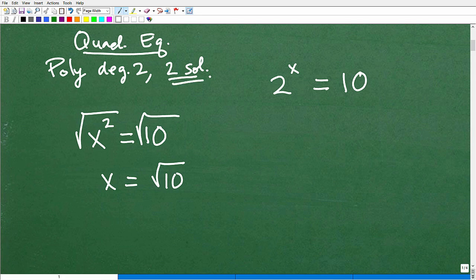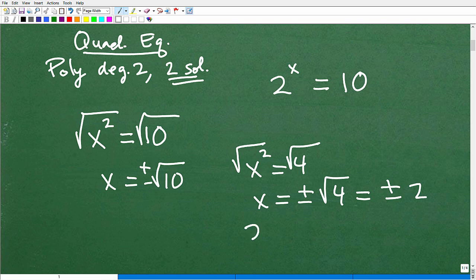So this is a situation where we can simply take the square root of both sides. And we have x is equal to the square root of 10. Now, you might be saying, hey, you said there was two solutions. Yes, there are two solutions. When you take the square root of a positive real number here, like this 10, it's always plus and minus. So just to emphasize that, if I say x squared is equal to 4, and I take the square root, it's going to be x is equal to plus or minus the square root of 4, which is plus or minus 2.